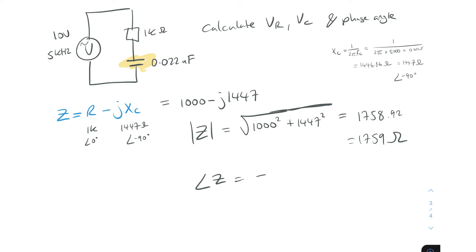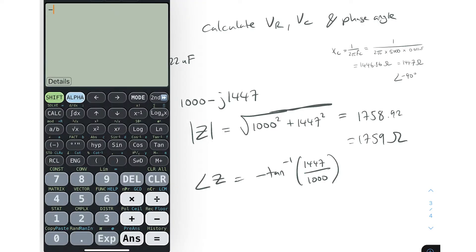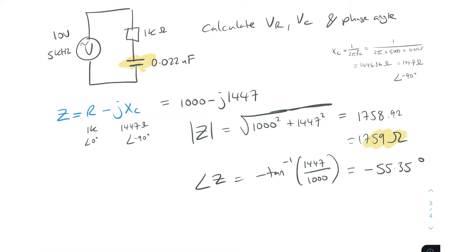Now let's get the phase angle of the impedance. The formula is minus tan⁻¹(1447 / 1000). Pulling up the calculator, that gives us minus 55.35 degrees. So we've now got the impedance in polar form: 1759 Ω ∠ -55.35°.